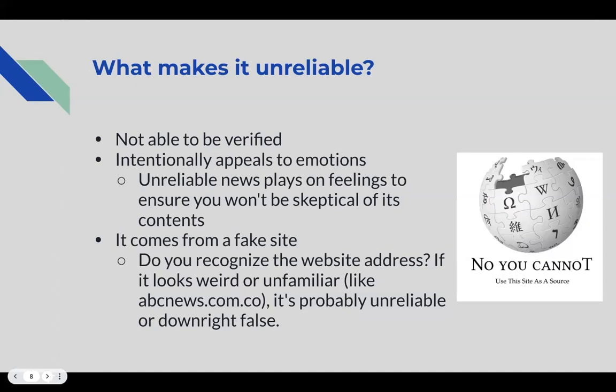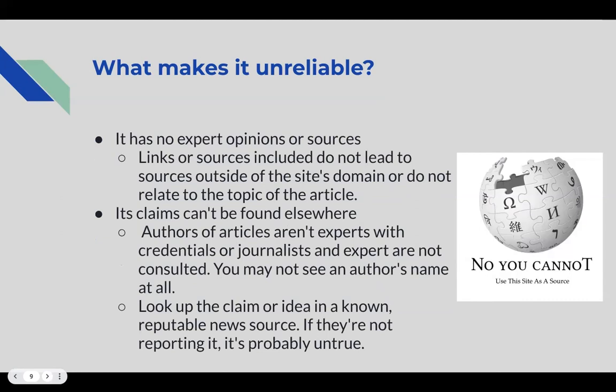Unreliable information may come from a fake site — if you don't recognize the website address or it looks weird or unfamiliar, it's probably unreliable or outright false. It may even be a copycat pretending to be another accurate source; for example, abcnews.com.co is not the correct web address for the actual news outlet. Additionally, it may not have any expert opinions or sources linked, preventing you from verifying whether the information is true.